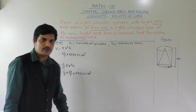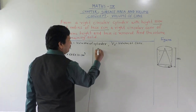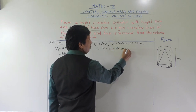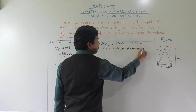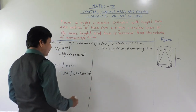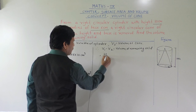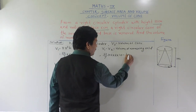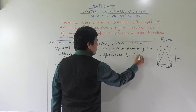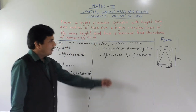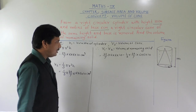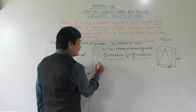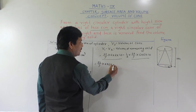Now we have V1 the volume of cylinder and V2 the volume of cone. We have to do subtraction V1 minus V2 to get the volume of remaining solid. V1 minus V2 equals: 22/7 into 6 into 6 multiplied by 10, minus 1/3 into 22/7 multiplied by 6 into 6 into 10. This common factor we can take outside.